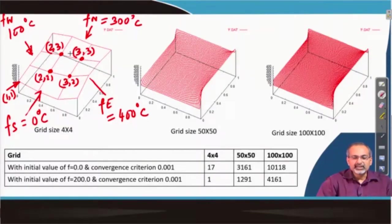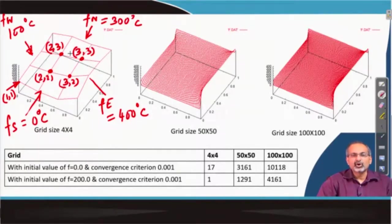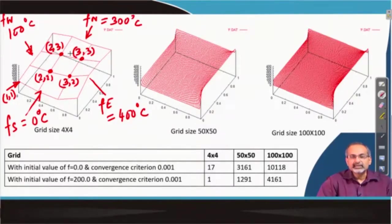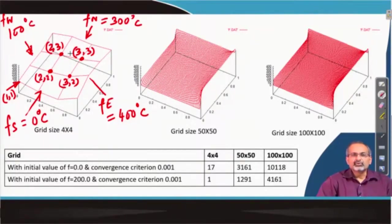We had briefly assessed what could be the measures for convergence: either you base it on the difference in the functional values at each and every internal grid point where you are updating the values through an iterative approach, or you try to take a global measure by computing the RMS error in convergence.